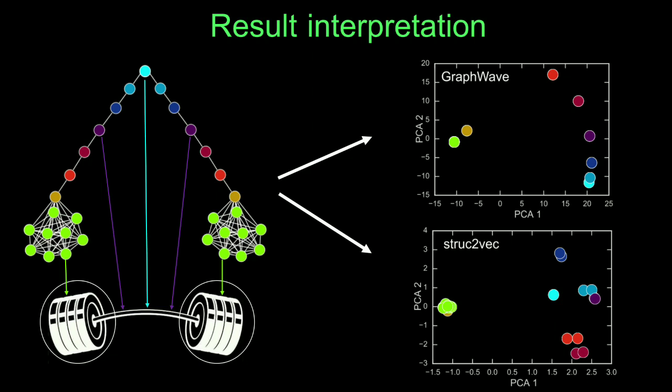However, Structure2Vec which is the old state-of-the-art cannot perfectly recover the roles. Structure2Vec cannot even recover roles of bar disks which are the rightmost and leftmost parts of the graph. However, GraphWave projects the nodes perfectly on top of each other. GraphWave increases the state-of-the-art accuracies more than a hundred percent.